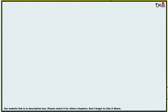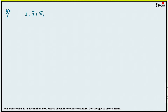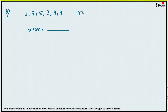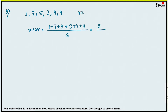Now next, sum number 5: the mean of the numbers 1, 7, 5, 3, 4, 4 is small m. So mean = (1+7+5+3+4+4) / 6 = 24 / 6 = 4. Therefore m = 4.